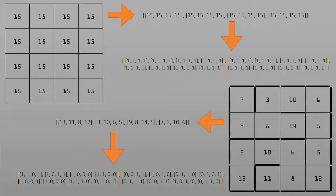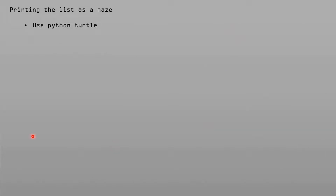The computer can understand the maze's dimensions, where the walls are, and potentially for a maze-solving algorithm, how to solve the maze. But to us, all of those ones and zeros mean nothing, so we need a way to draw the output.